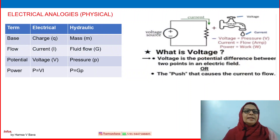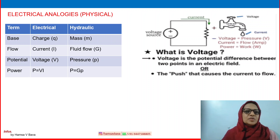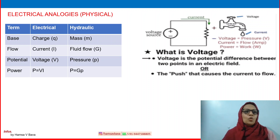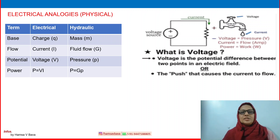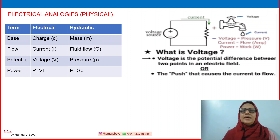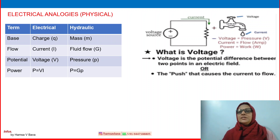We can see the electrical and hydraulic analogy between terms. Charge in electrical corresponds to mass in hydraulic; likewise, current in electrical corresponds to fluid flow in hydraulic systems. Voltage in the electrical system is analogous to pressure in the hydraulic system. Power P = VI in the electrical system, and power equals fluid flow times pressure in the hydraulic system. So: voltage as pressure, current as flow, and power as work.